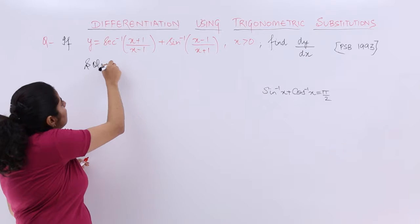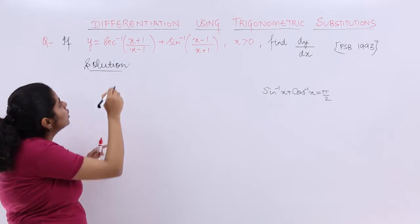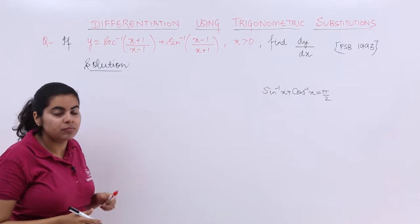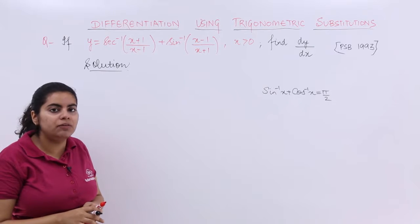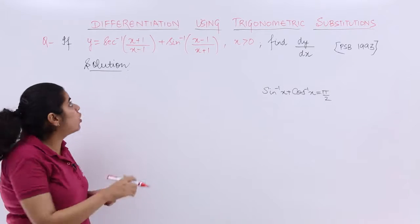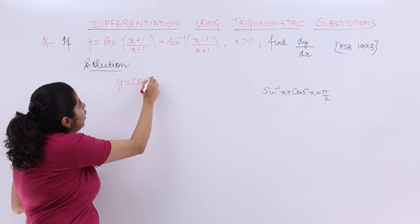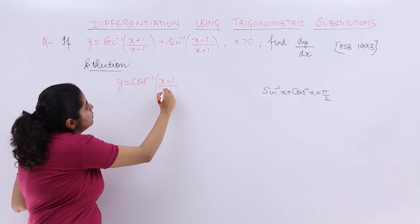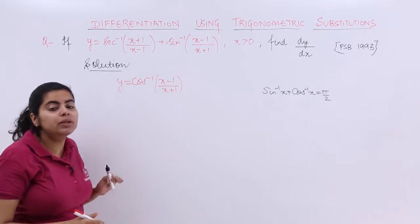I write the solution and let's start. You see here it is secant inverse. What is the reciprocal of secant inverse? Cos inverse. Can we not write y is equal to cos inverse of (x-1)/(x+1) from the knowledge of inverse trigonometric formulas?